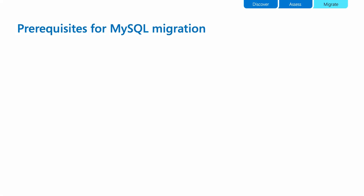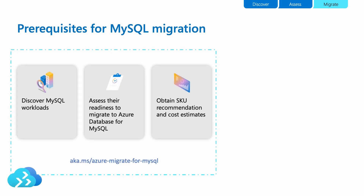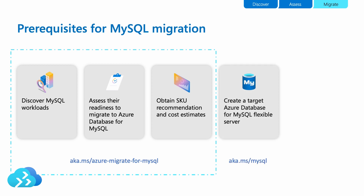Before initiating a MySQL migration, ensure that the following prerequisites are in place. First, use Azure Migrate to discover MySQL workloads, assess their readiness to migrate to Azure Database for MySQL, and obtain SKU recommendations along with cost estimates. For more information and links to tutorials, go to aka.ms/AzureMigrateForMySQL. Next, create a target Azure Database for MySQL flexible server with the configuration obtained from the Azure Migrate assessment.